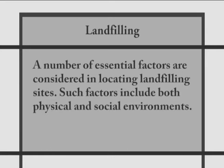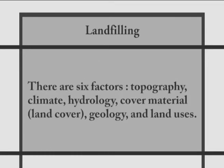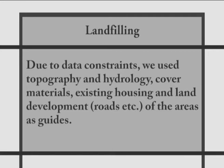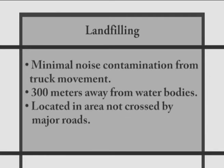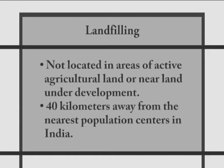Looking at landfilling: A number of essential factors are considered in locating landfill sites, including both physical and social environments. There are six factors: topography, climate, hydrology, cover material (i.e., land cover), geology, and land uses. Due to data constraints, topography, hydrology, cover material, existing housing and land development of the areas are used as guides. The criteria specify that the dump site should be outside the buffer zone of hydrology, forested areas, roads, and existing houses — specifically 300 meters away from the main road, areas less than or equal to 230 square meters based on contour maps, minimal noise contamination from truck movement, 300 meters away from water bodies, not crossed by major roads, not in areas of active agricultural land or near land under development, and 40 kilometers away from the nearest population centers in India.